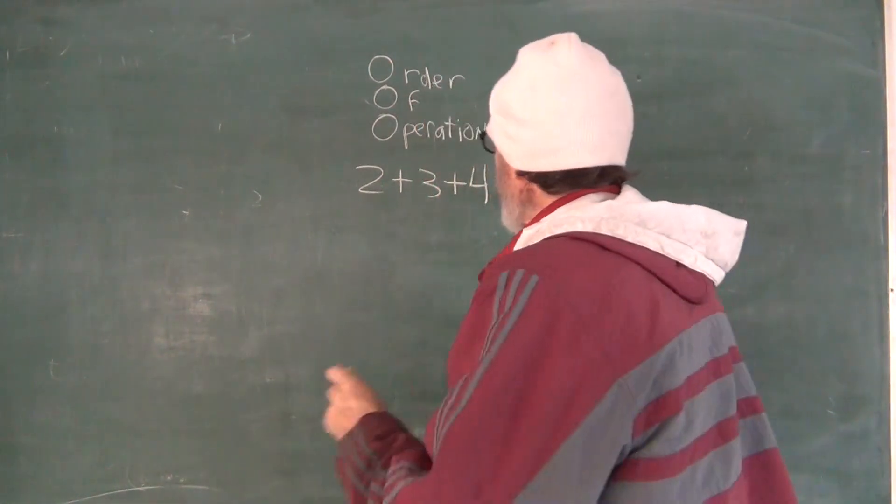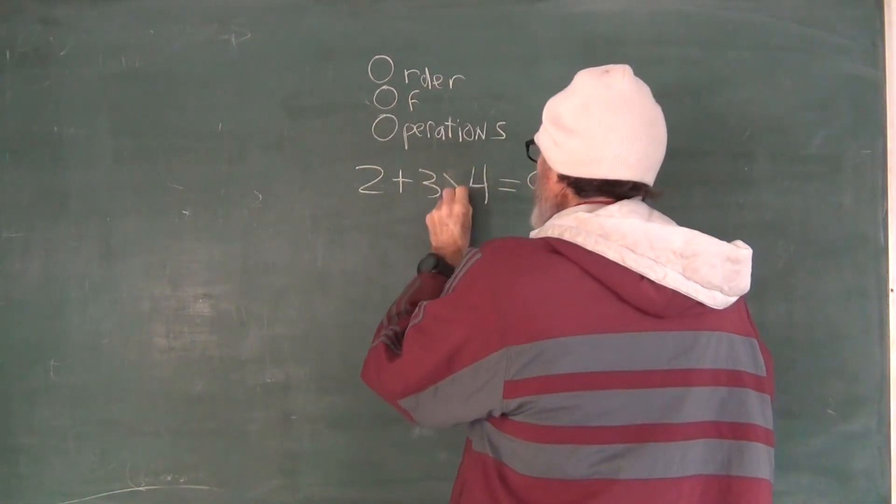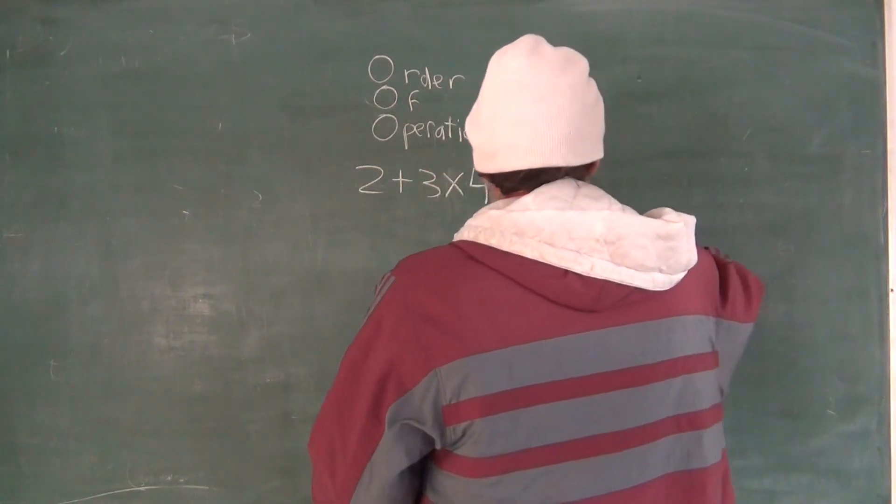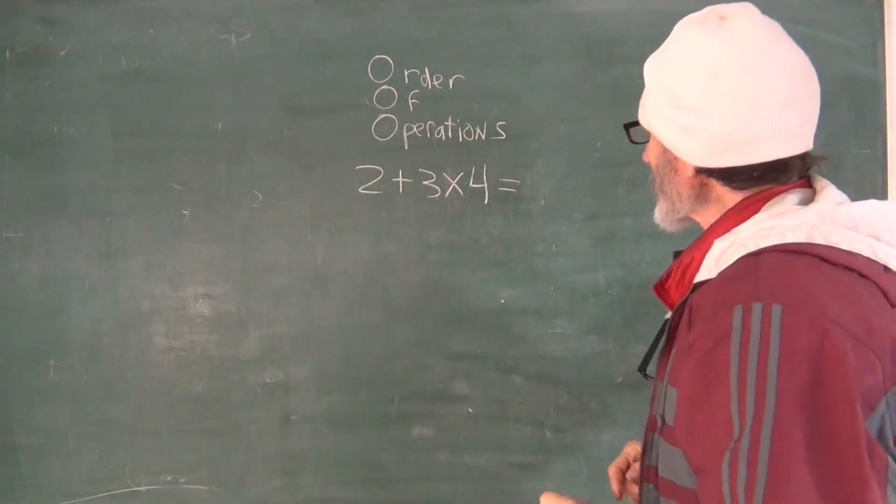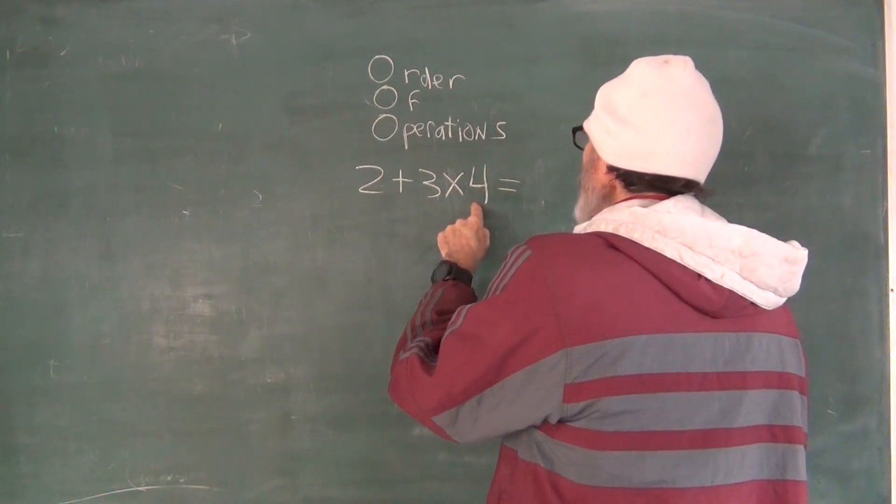But suppose we do this instead. Let's rotate this guy from a plus to a times. Now it gets a little more interesting because two plus three is five times four is 20.